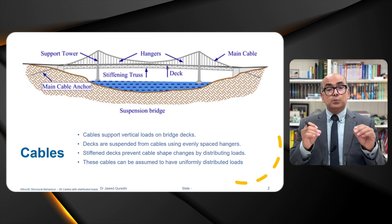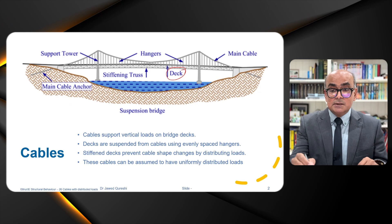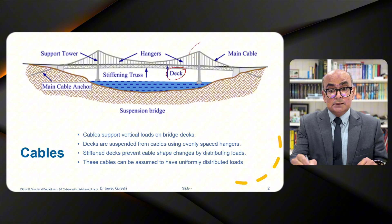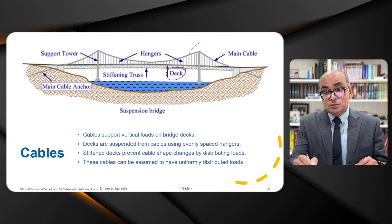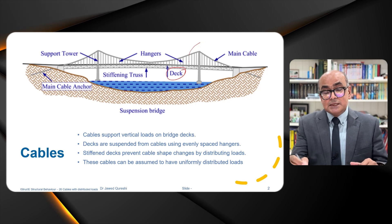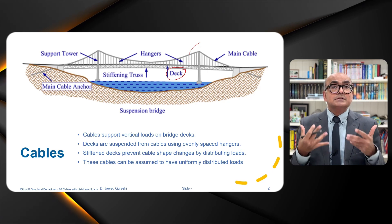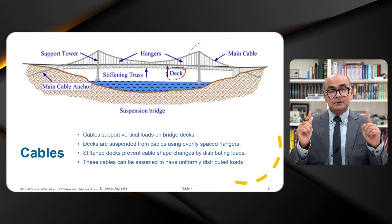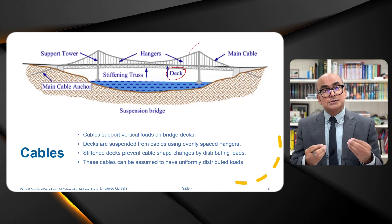Cables support vertical load of bridge decks. This bridge deck is suspended with the help of main cables and vertical cables are termed as hangers and stiffened decks are used so that the shape of cable is not disturbed. These cables can be assumed to have uniformly distributed load. When we have a suspension cable where you have a main cable and vertical hangers supporting a bridge deck, this is a classic example of cables supporting a uniformly distributed load.